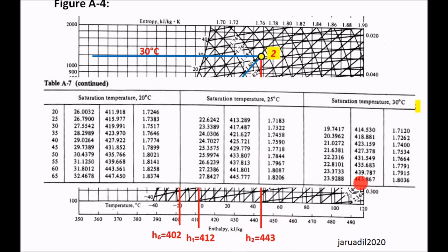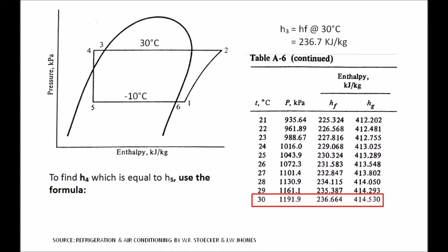Using the table, this gives 443.867 kJ/kg. I just write it to one decimal place as 443. So using both the graph and the table, we get 443 — they match. So point 2 is confirmed at the crossing of the constant entropy line 1.8036 and the 30 degrees Celsius saturation temperature. Now to find H3: H3 is equal to HF at 30 degrees Celsius, since point 3 is on the saturated liquid line. From the table, H3 = 236.7 kJ/kg.